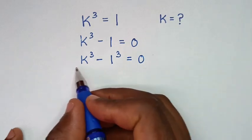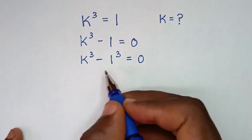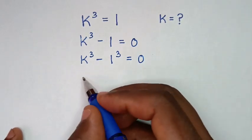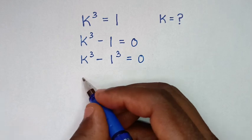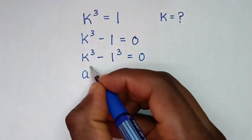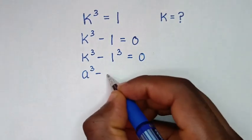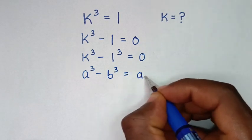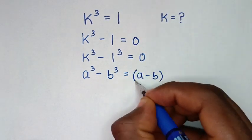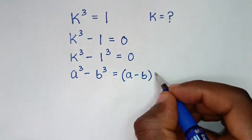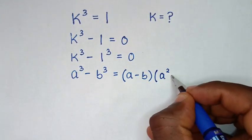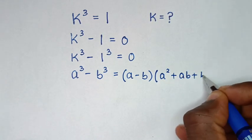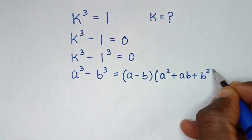From here, the left side is in the form of difference of 2 cubes. So we'll apply the difference of 2 cubes rule: a power 3 minus b power 3 is equal to a minus b, bracket times bracket a square plus ab plus b square, bracket.